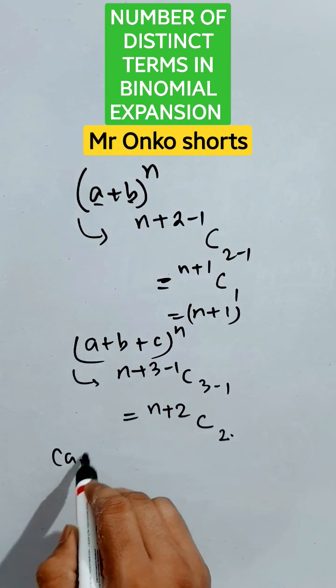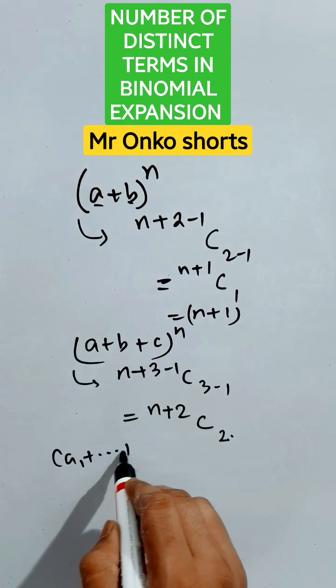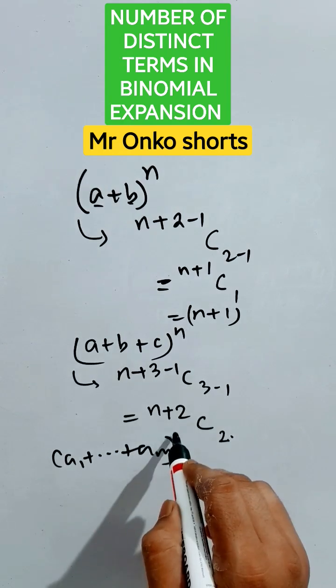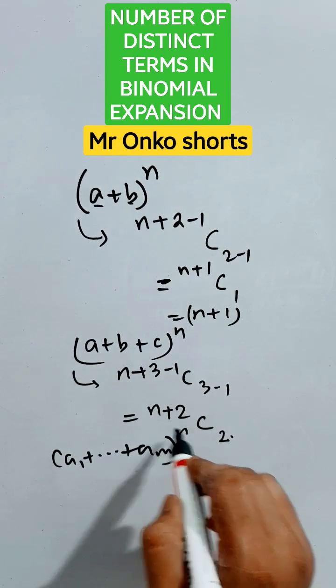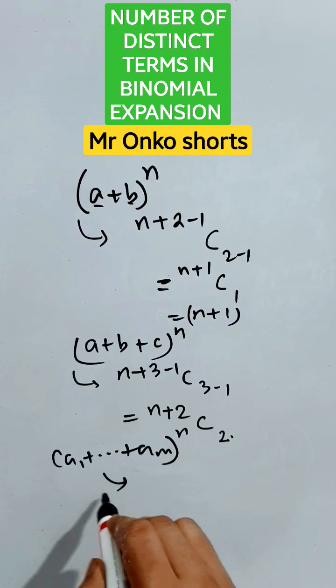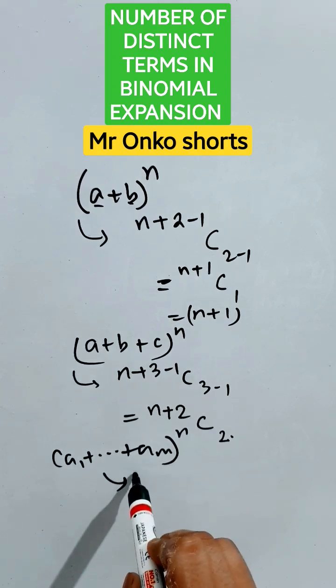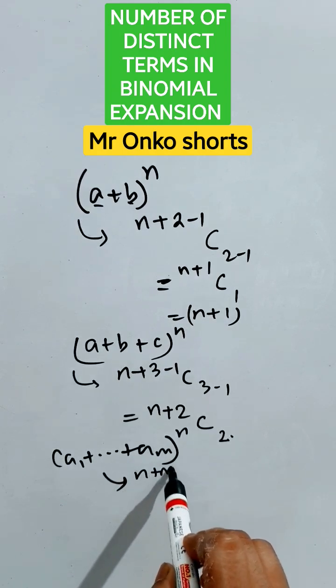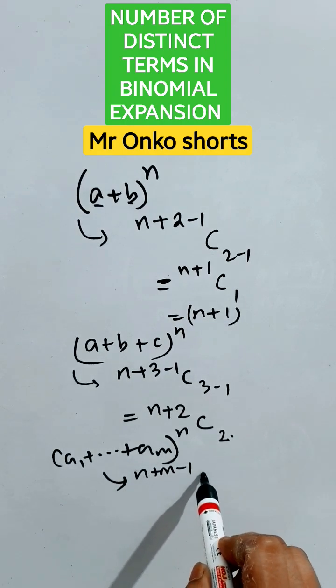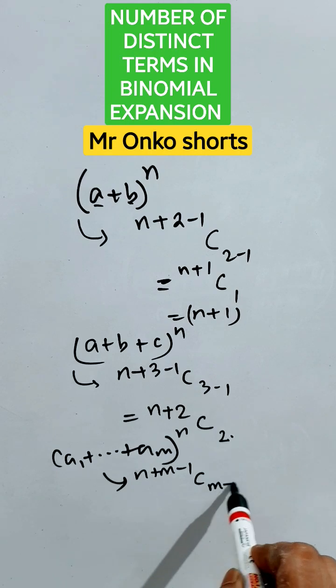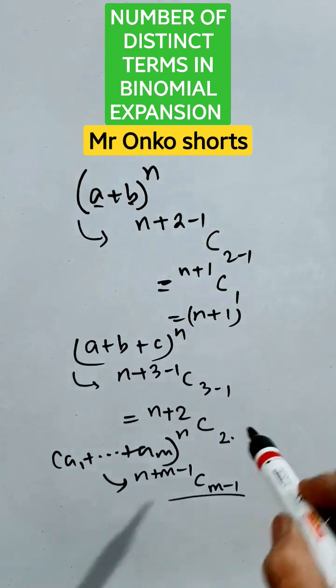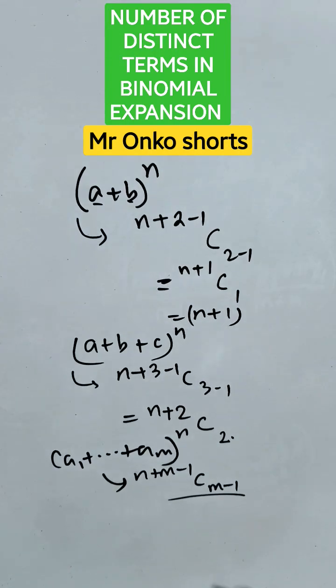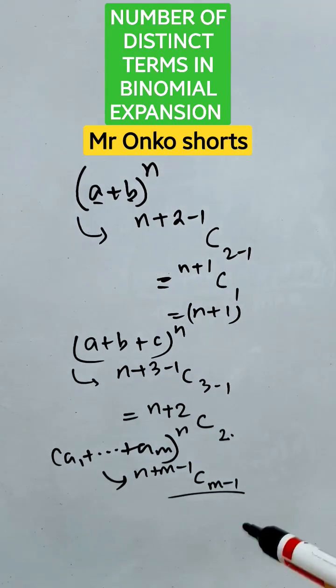In general, if there are m terms inside the brackets and the power is n, then the number of distinct terms will be n+m-1Cm-1. That is the answer. Thus you can solve this. Thank you, keep it up.